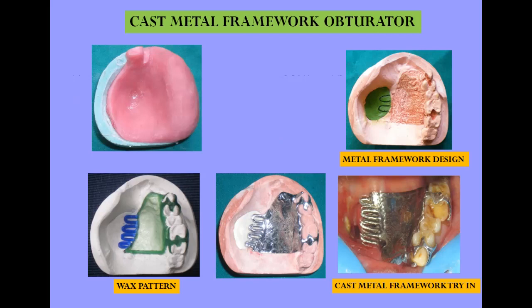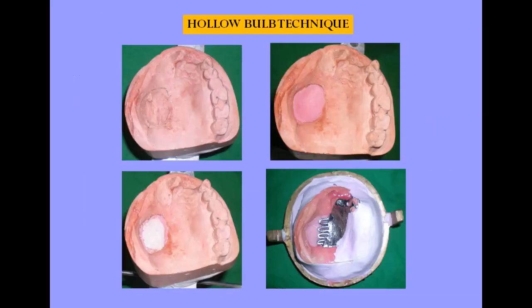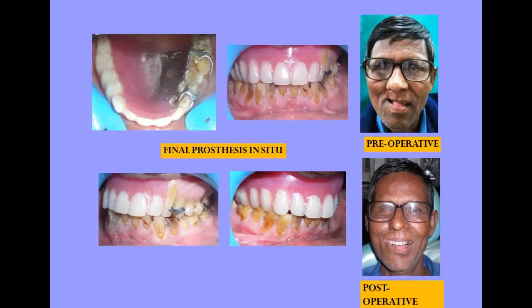This is a case where we fabricated a cast metal framework obturator. You can see that the framework was tried and jaw registration was recorded. After trying, we fabricated a hollow bulb obturator so that acceptance of the prosthesis can be better. You can also incorporate characterization pigments so that aesthetics can be enhanced. You can see the difference before and after prosthetic treatment.